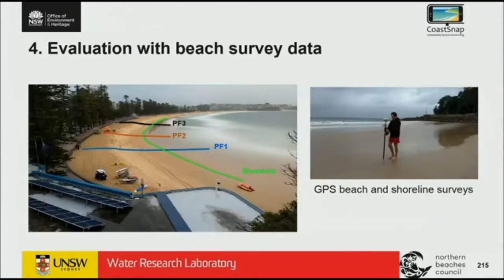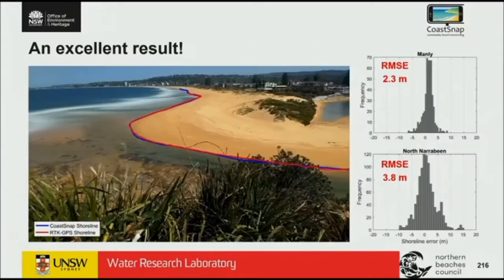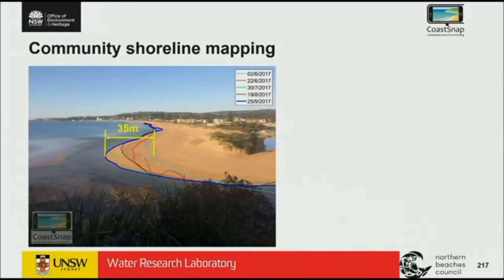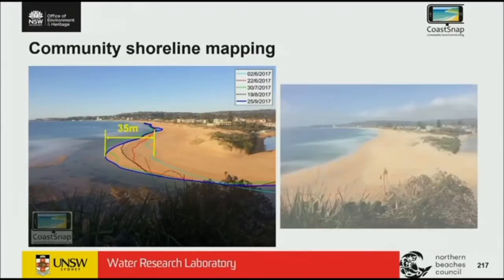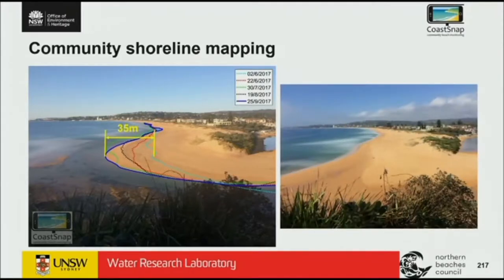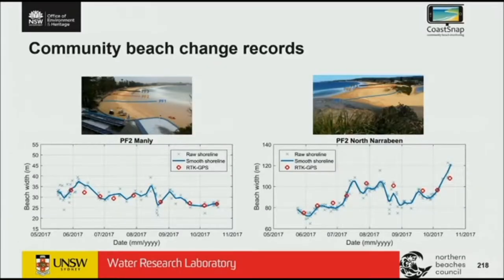How did we find out if the data was actually any good? We had to go out and do surveys throughout the project as well — surveying the shoreline and beach profiles at different points. We found a pretty good result. That's our RMSE error for Manly and North Narrabeen — a comparison of the community-sourced CoastSnap shoreline versus a GPS-surveyed shoreline, how we would traditionally do it. That's just an example of shorelines the community has essentially measured and how dynamic the beach can be — the whole entrance is now closed and full of sand just last week.